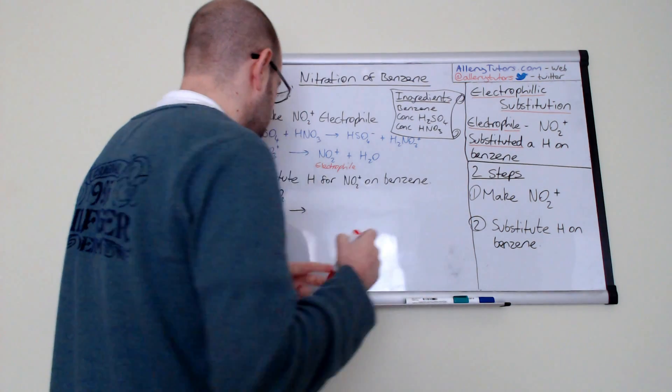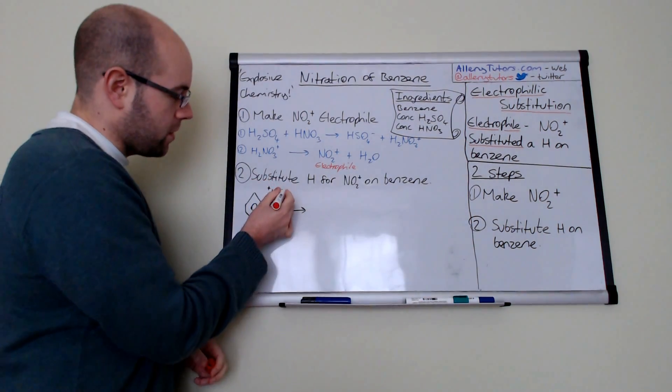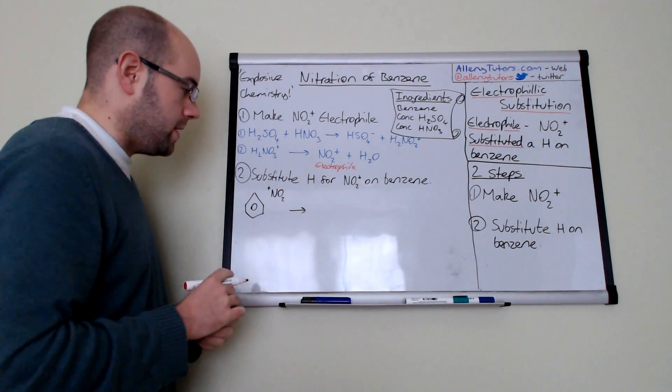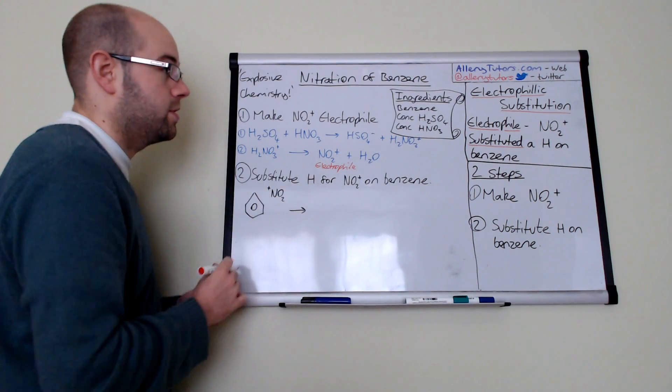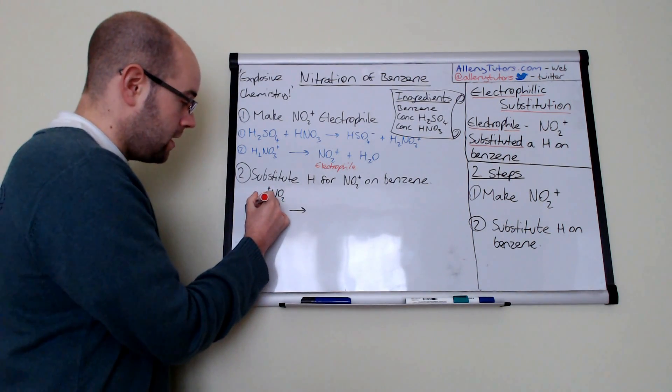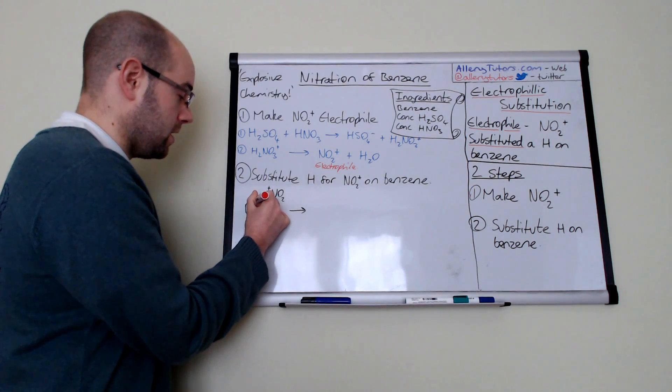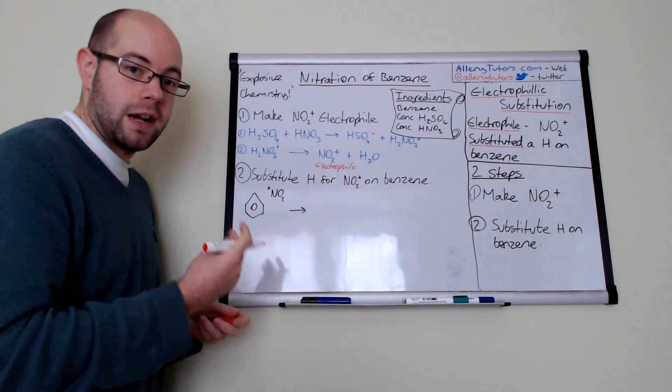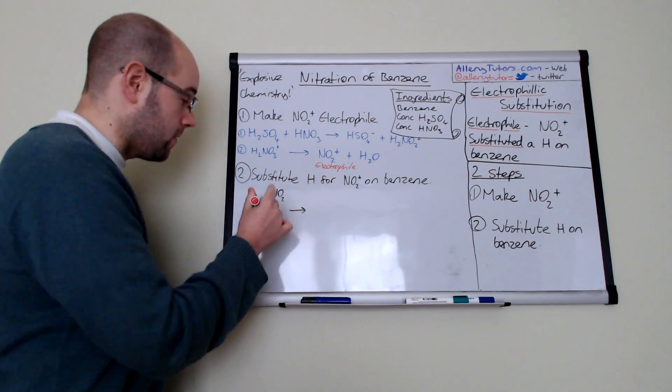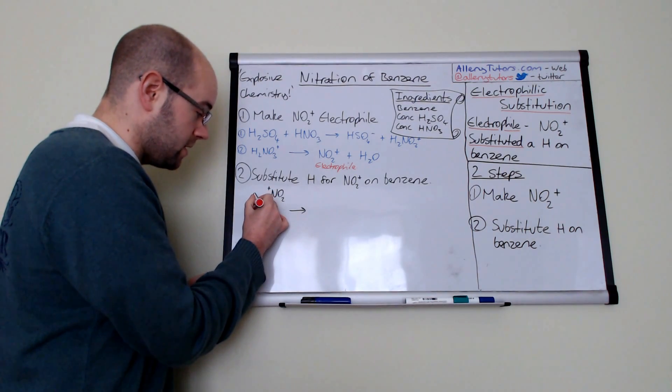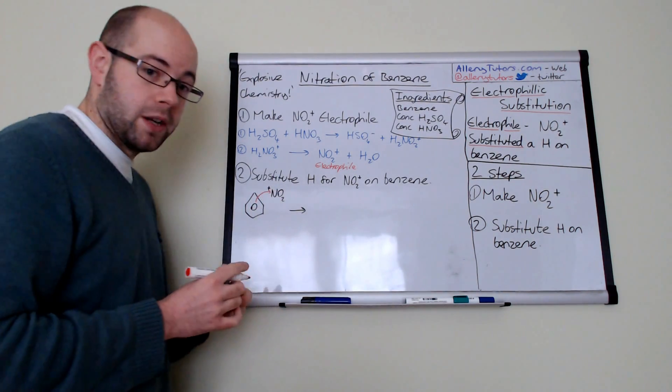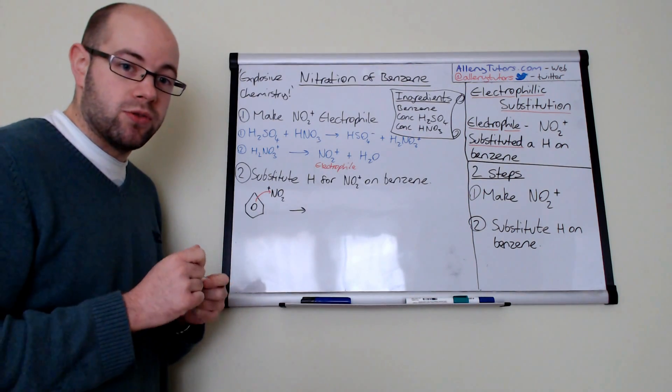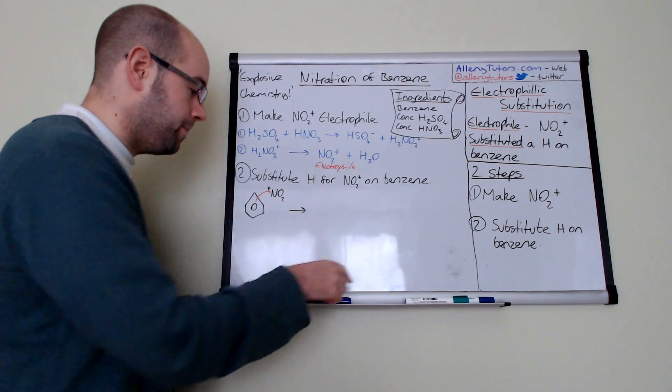So there's our benzene ring. We're going to draw our mechanism. You've got NO2+, an electrophile, so this is going to go for something with high electron density. Our high electron density is in the middle there. The curly arrows show direction of electron travel. Our electrons are coming from the benzene in the middle to the NO2+. It's very important that you draw it from the circle in the middle.